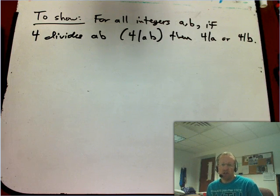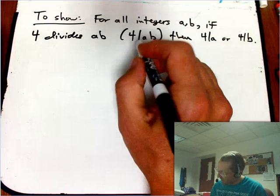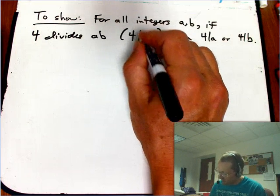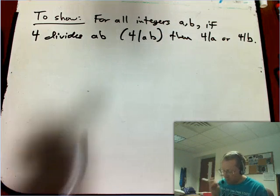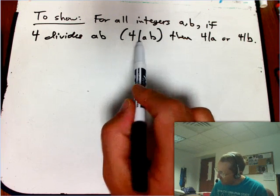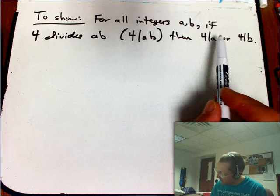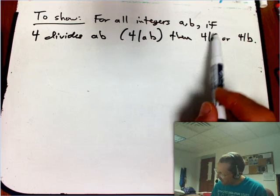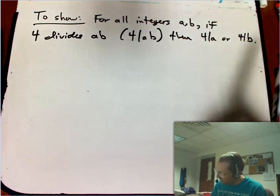For all integers a and b, if 4 divides ab, the product, and we write that with a vertical bar, the pipe vertical bar symbol right above enter on most keyboards, if 4 divides ab, then 4 divides a or 4 divides b.